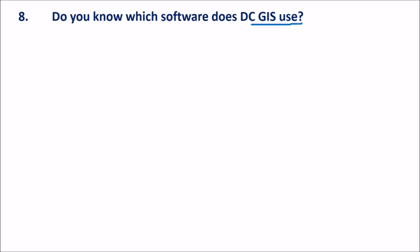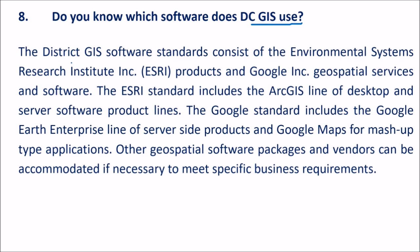DC GIS software standards consist of Environmental Systems Research Institute ESRI products and Google's geospatial services and software. The ESRI standard includes the RVIS line of desktop and server software product lines, and Google Maps for mashup-type applications. Other geospatial software packages and vendors can be accommodated if necessary to meet specific business requirements.